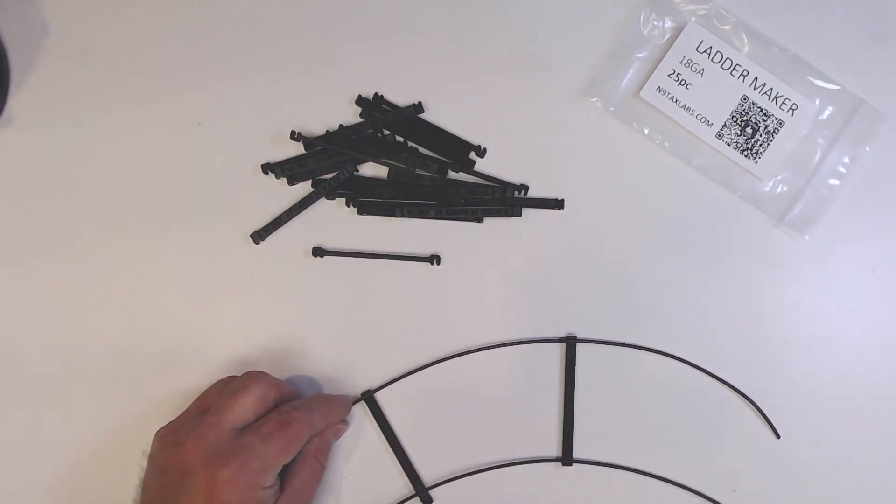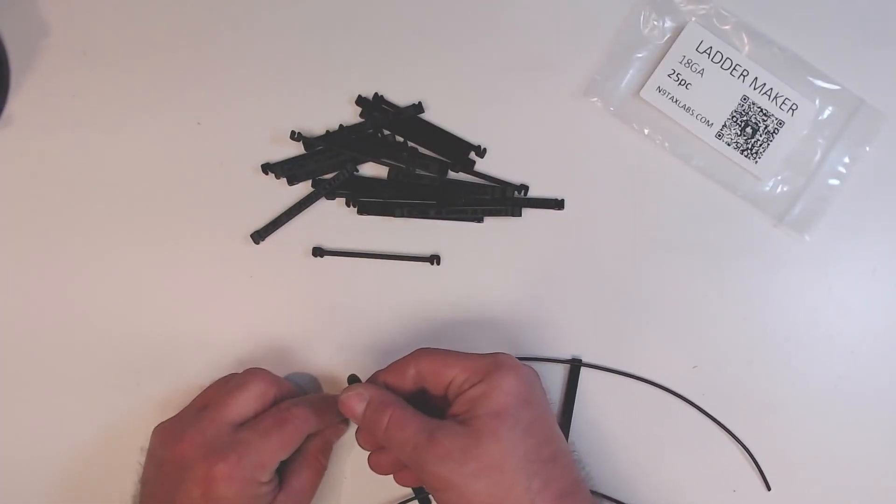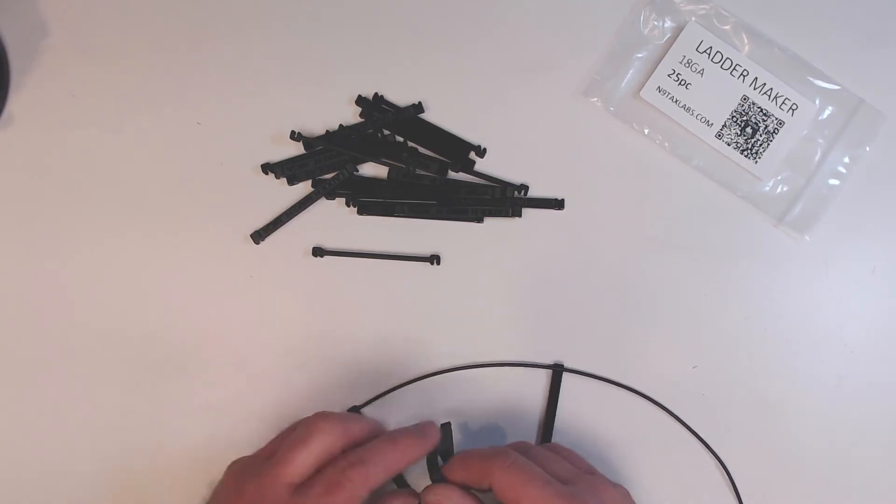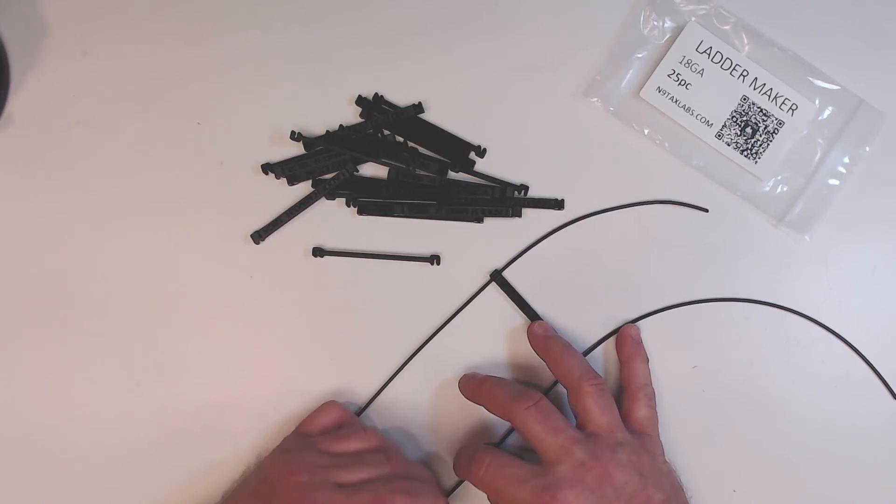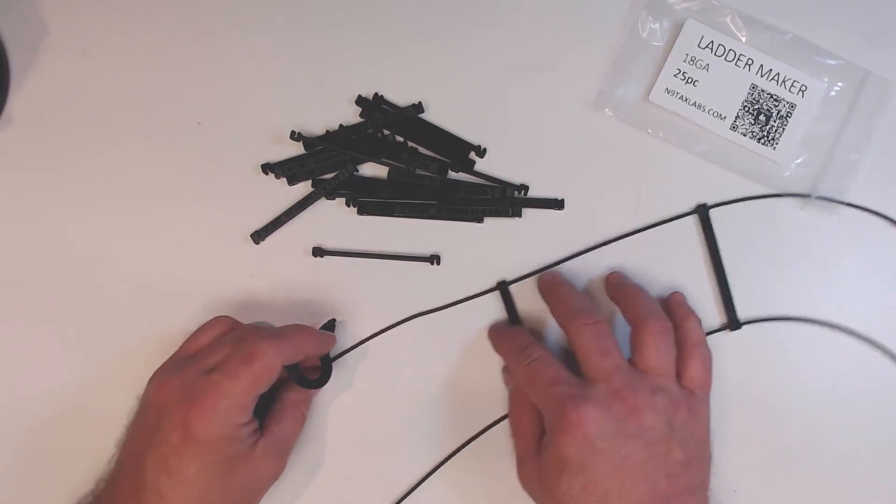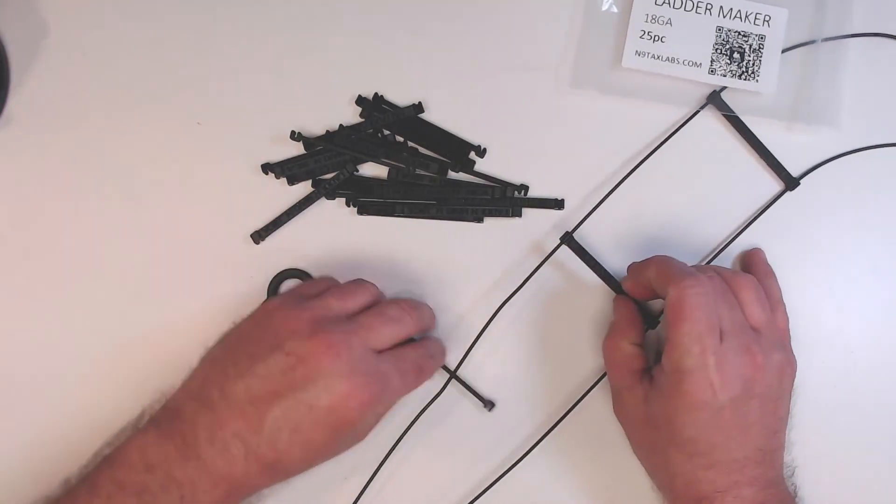You could probably put together 100 feet of this stuff in about five minutes. It's really pretty quick. Obviously you're not going to space them this close together, but for the demonstration we can show you how quickly these things go together. Here I'll do one more just to demonstrate here really quickly. Push these guys in there and boom, that's it, we're making ladder line.